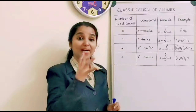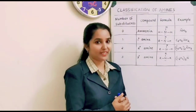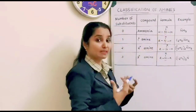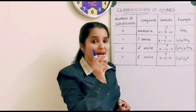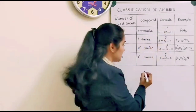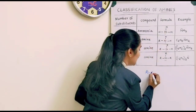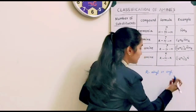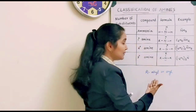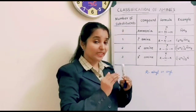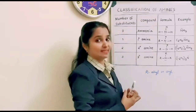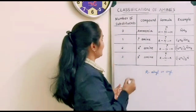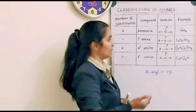Amine is a derivative of ammonia. Ammonia has N and 3 hydrogens. Any of these hydrogens can be substituted by an alkyl or aryl group — that is why we use R, where R stands for alkyl or aryl group. So, when any hydrogen in ammonia is substituted by R, it can be an amine. We are now trying to understand which will be a primary amine, a secondary amine, or a tertiary amine.